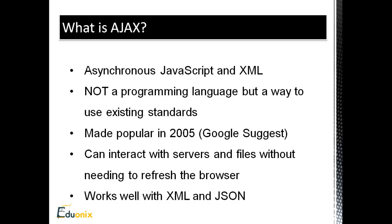AJAX is not a programming language but it's a way to use existing standards, which we'll look into in a minute. It was made popular in 2005 and the first big implementation of AJAX that we saw was with Google Suggest — when you search something in Google and type in a letter or a word and get suggestions that pop up in a dropdown. Google Maps also uses AJAX. It allows us to interact with servers and files without needing to refresh the browser.